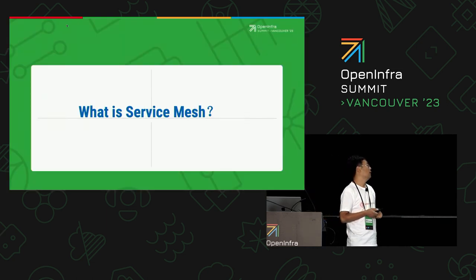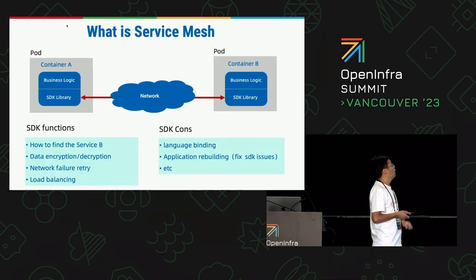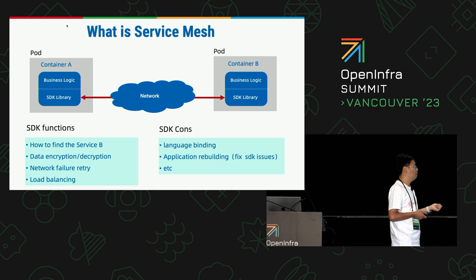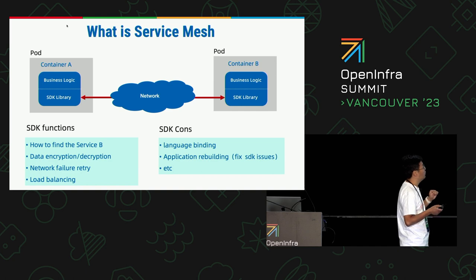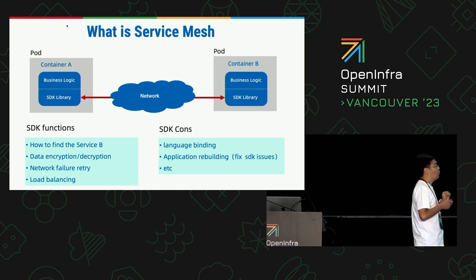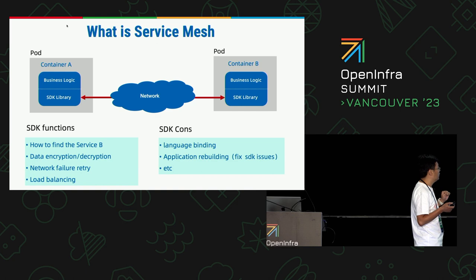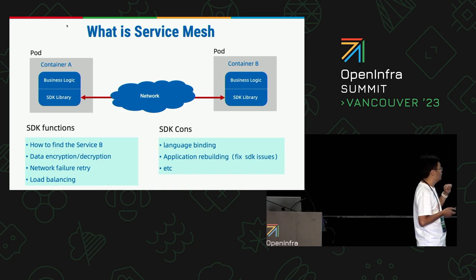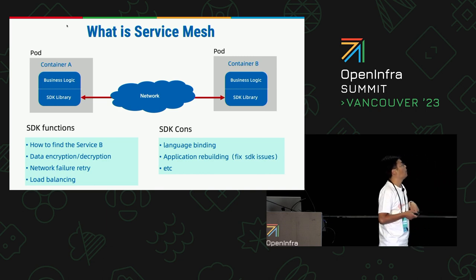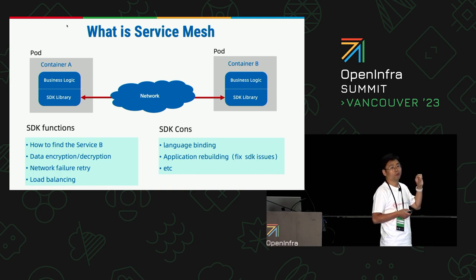Now let me talk about what is service mesh — just a brief description. As we all know, before the service mesh, developers would write programs that dealt with network issues directly: data encryption and decryption, service discovery, retries, and other network features. All of those functions were combined with the business logic — all in one process.